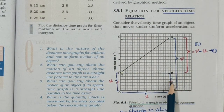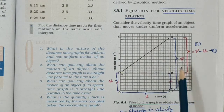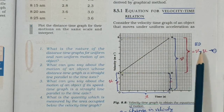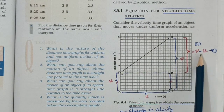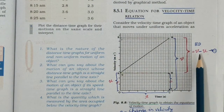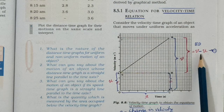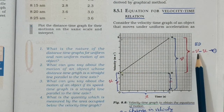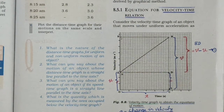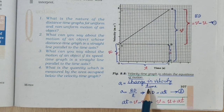The distance BD on the graph represents v minus u, which is the change in velocity — because it is measured on the y-axis. BD is the change in velocity: final velocity minus initial velocity.